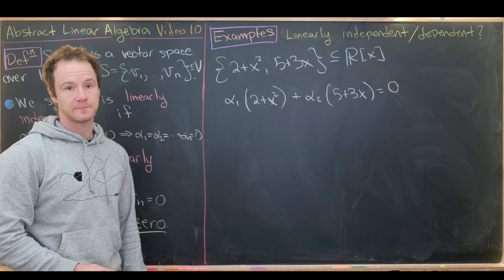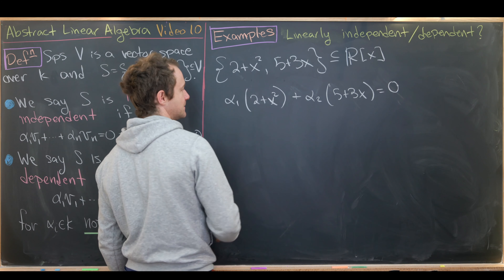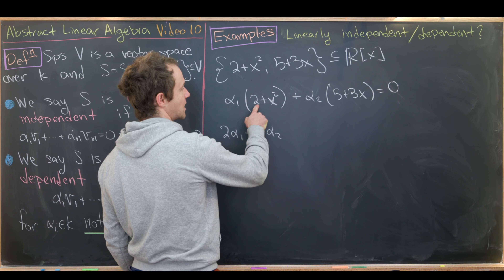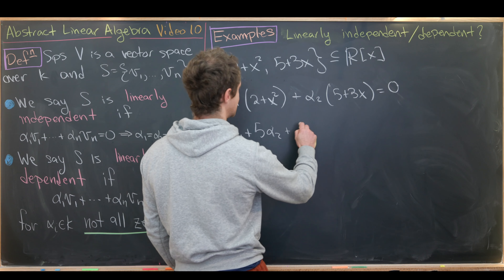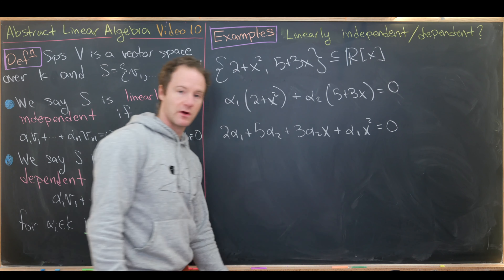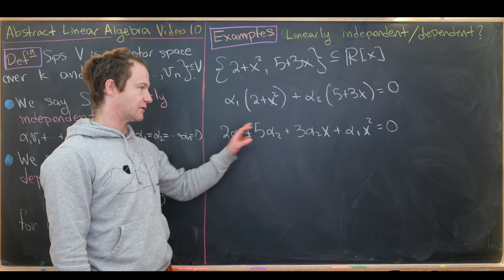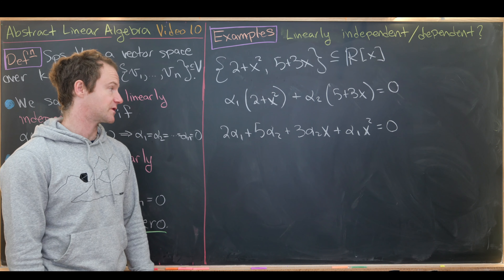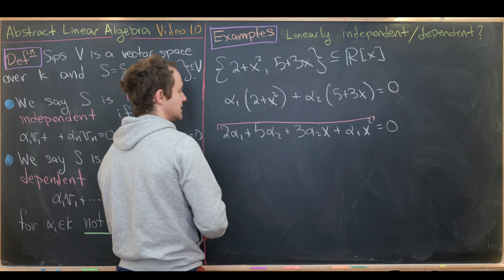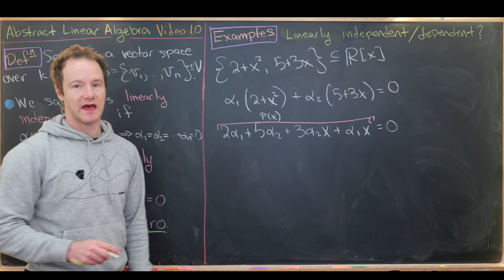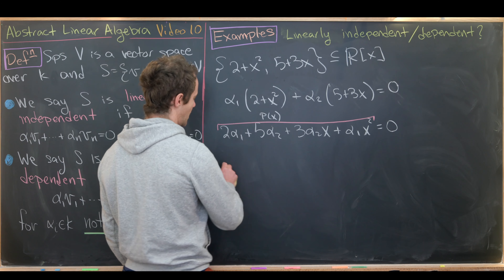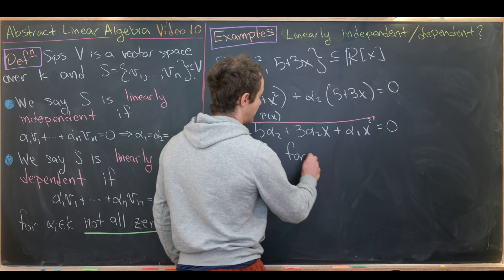Expanding: (2·alpha_1 + 5·alpha_2) + (3·alpha_2)x + (alpha_1)x² = 0. Call this p(x). For a polynomial to equal zero, it must equal zero for all x. Evaluating at x = 0: 2·alpha_1 + 5·alpha_2 = 0. Evaluating at x = 1: 3·alpha_1 + 8·alpha_2 = 0. Multiplying the first equation by 3 and the second by -2 and adding gives -alpha_2 = 0, so alpha_2 = 0, and then alpha_1 = 0. These polynomials are linearly independent.